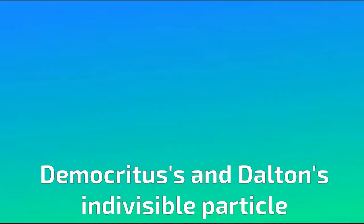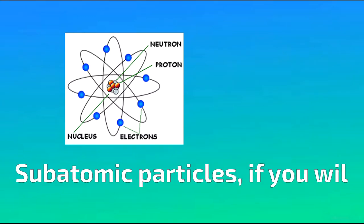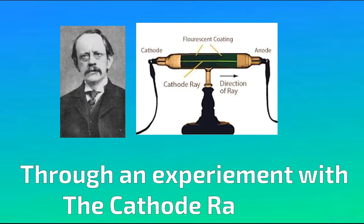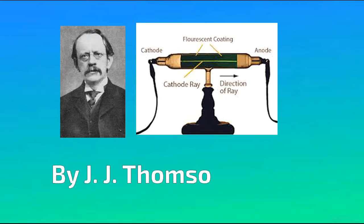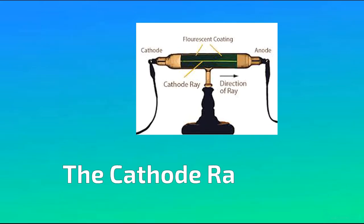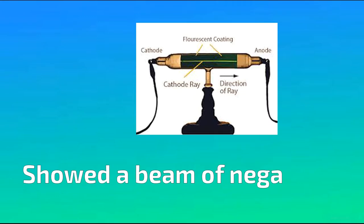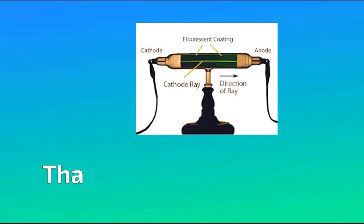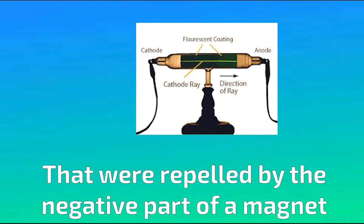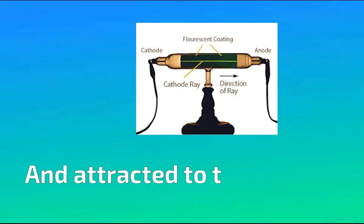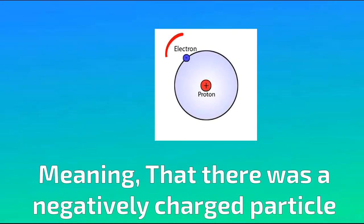Democritus' and Dalton's indivisible particle was found to be made of smaller particles, subatomic particles, if you will, through an experiment with the cathode ray tube by J.J. Thompson in 1840. The cathode ray tube experiment showed a beam of negatively charged particles that were repelled by the negative part of a magnet and attracted to a positive side, meaning that there was a negatively charged particle.